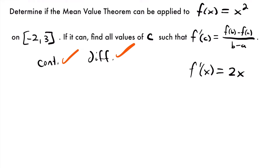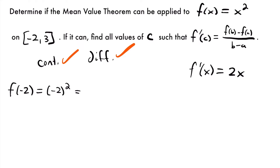Now that we have confirmed that we can apply the mean value theorem to this function, we can start to solve for our values of c. The first thing I recommend we do is find the slope between our two endpoints. So we'll start by evaluating each of our endpoints, b and a, which is in this case 3 and negative 2. First we'll plug in negative 2, so we'll have f of negative 2, and that will be equal to negative 2 squared.